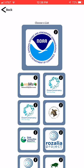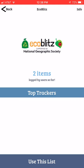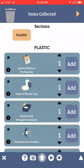You'll want to click the EcoBlitz list, tap it, and confirm you've got the proper list, and then click Use This List.